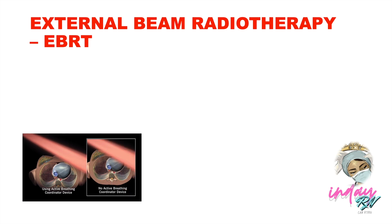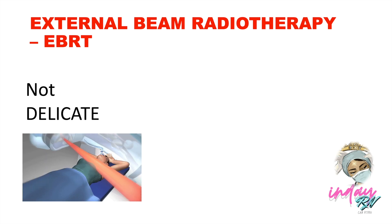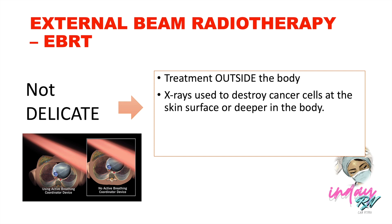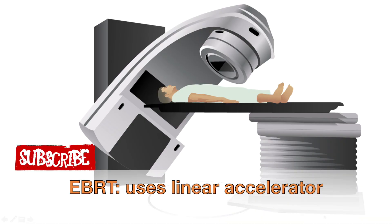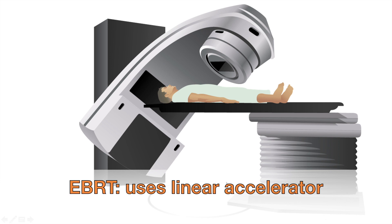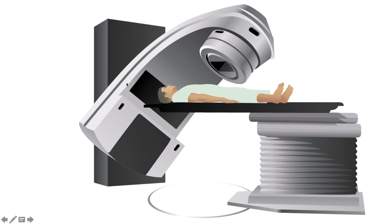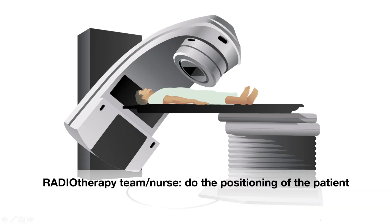External beam radiotherapy is not as invasive to the patient because it is a treatment done outside the body. X-rays are used to destroy cancer cells at the skin surface or deeper in the body. EBRT is usually conducted using a linear accelerator — a machine that directs a high-energy beam of radiation into the body. As the patient lies on the table, the linear accelerator moves around the patient to deliver radiation from several angles and can be adjusted to deliver a precise dose as ordered.